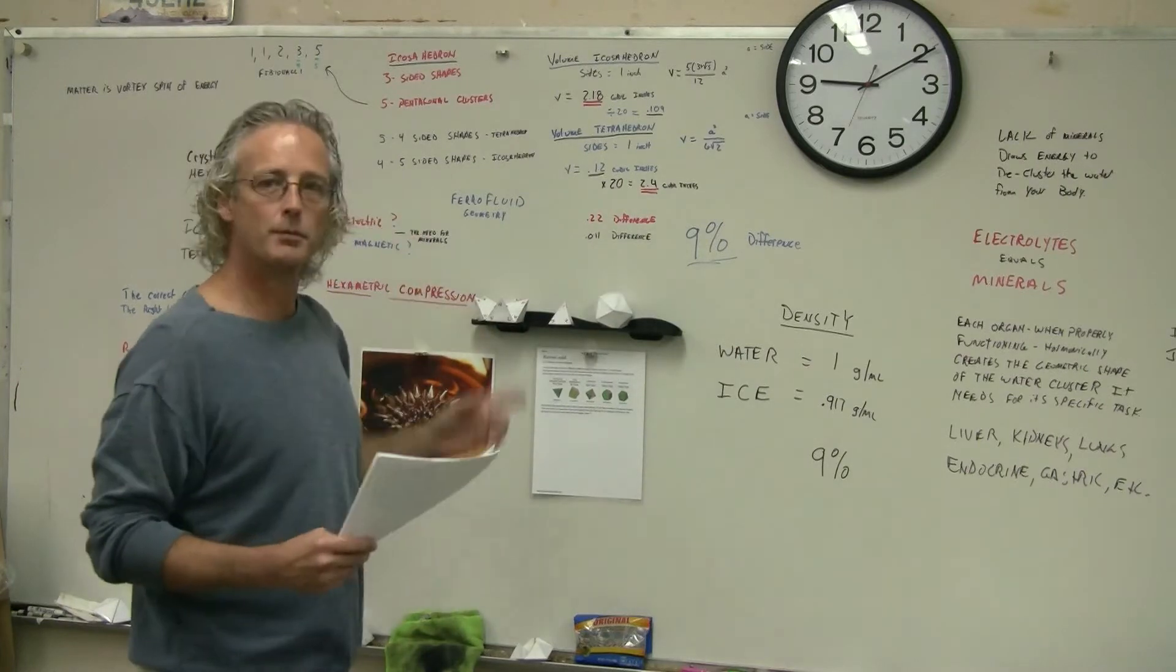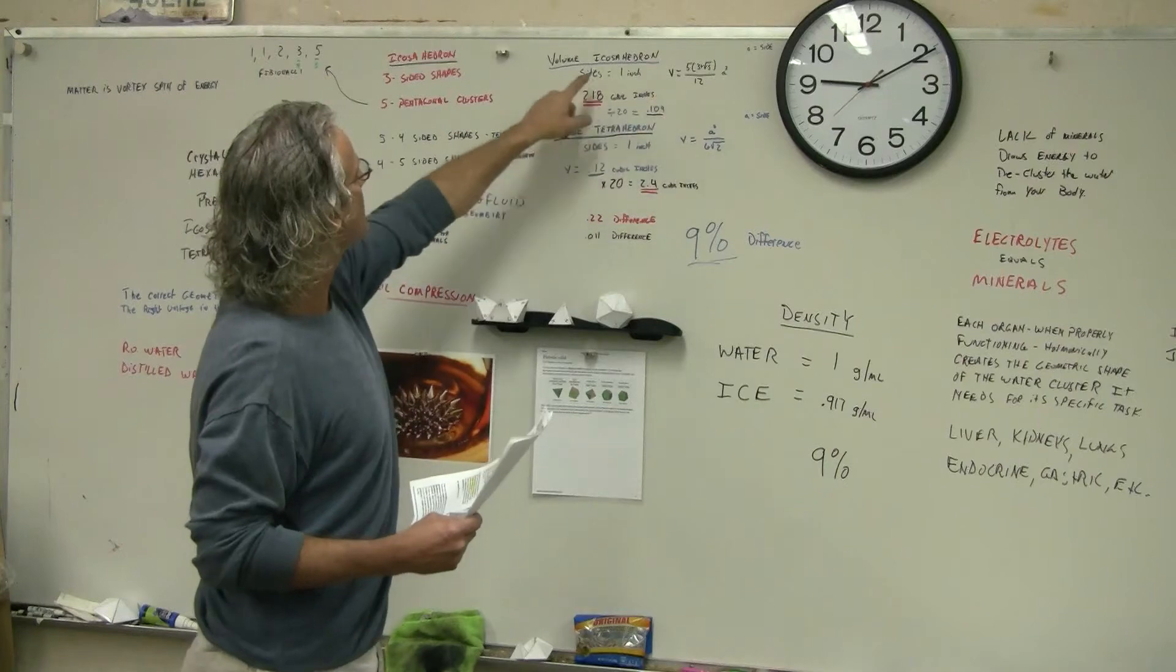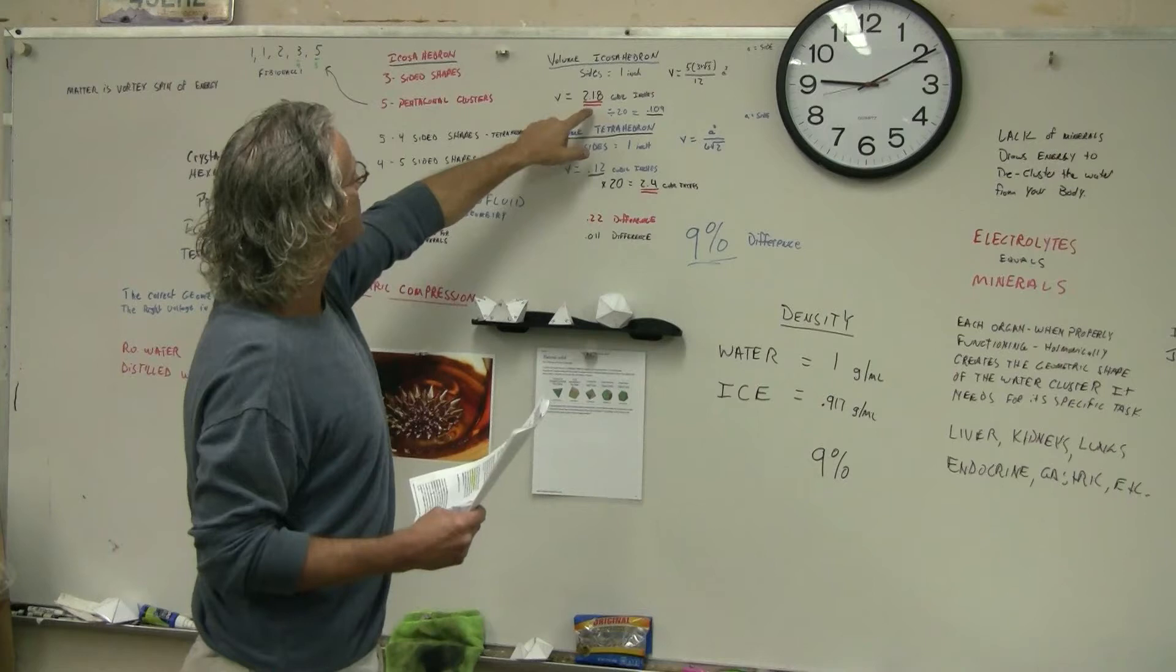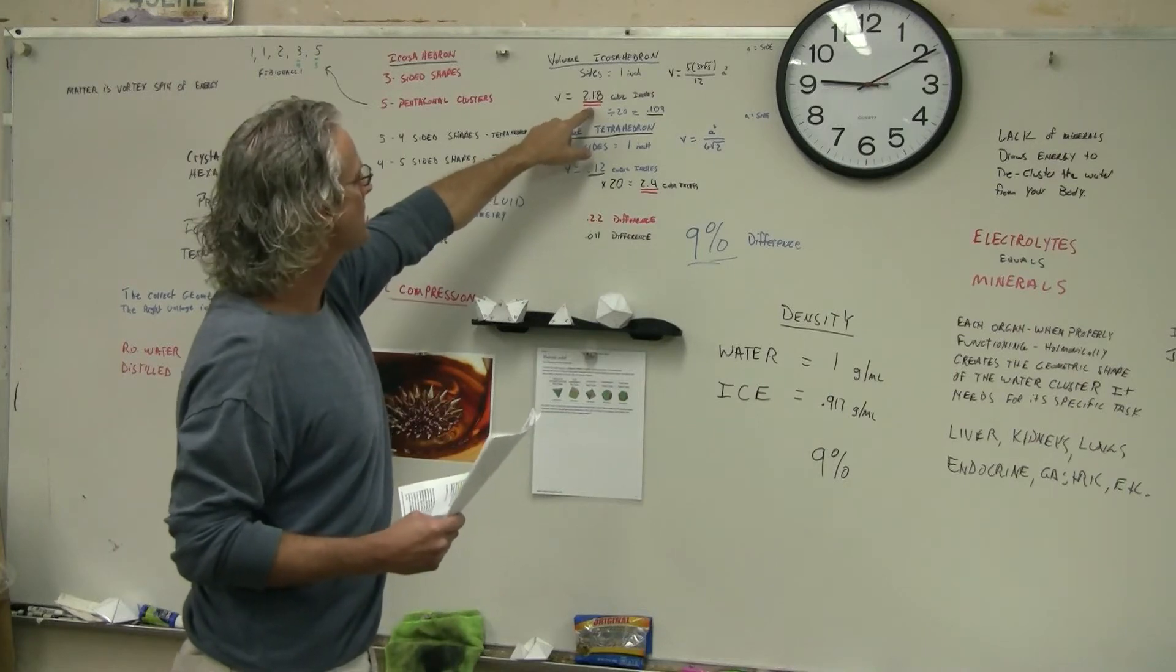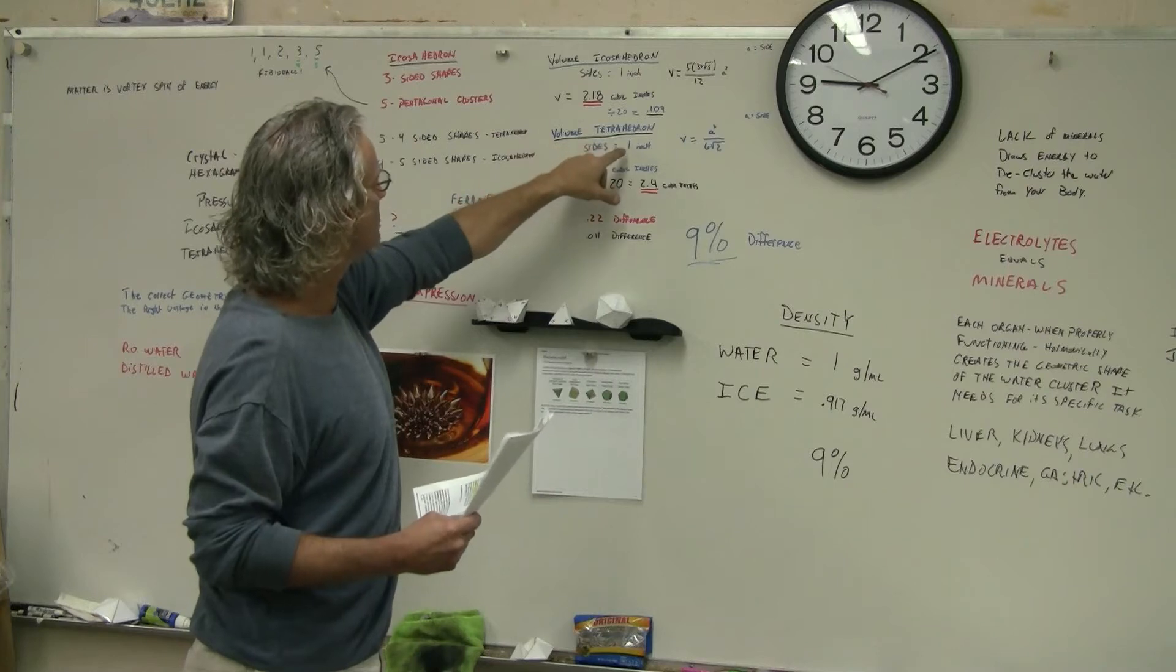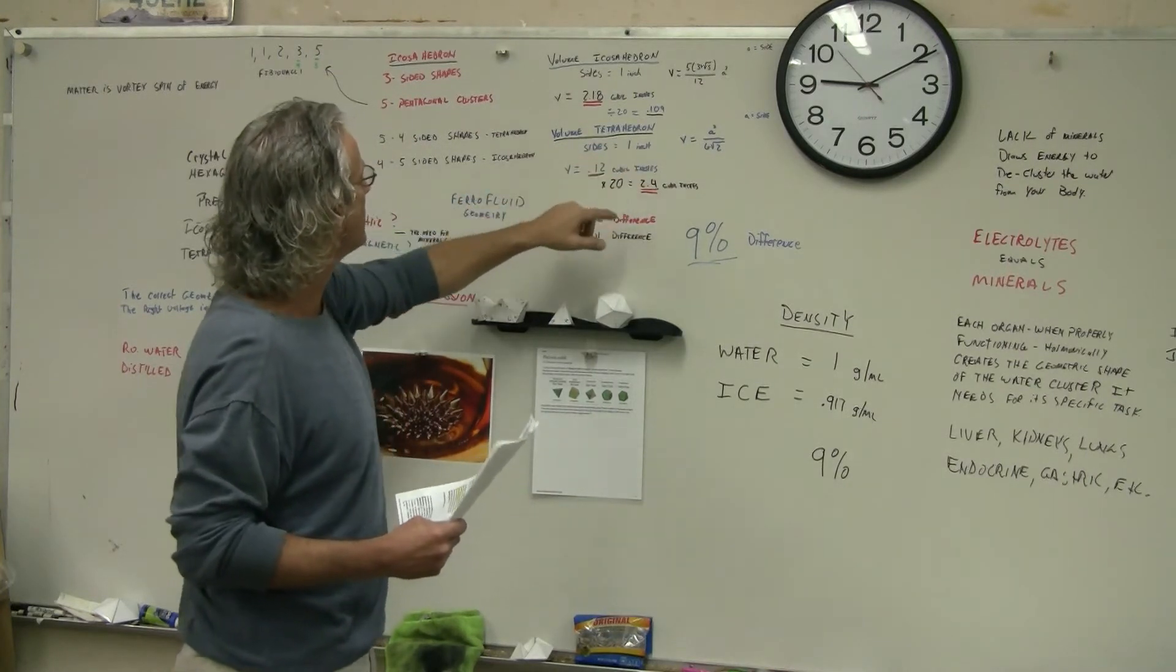Now here's the problem. When you calculate the volume for an icosahedron with a side of one inch, you get 2.18 cubic inches. If you calculate the volume for a tetrahedron with a side of one unit...